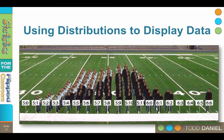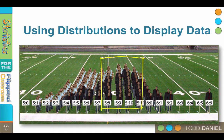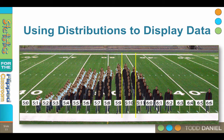Once everyone has taken their place on the football field, we can begin to learn something about our distribution. For instance, some rows are longer than other rows — that is because there are more people in those rows. If we just look at the males, those wearing the black shirts, we see that the longest row is also the middle of the data. The longest row is 5'10". That middle row is our measure of central tendency — it is where the center of the data tends to be, and it has the greatest frequency.